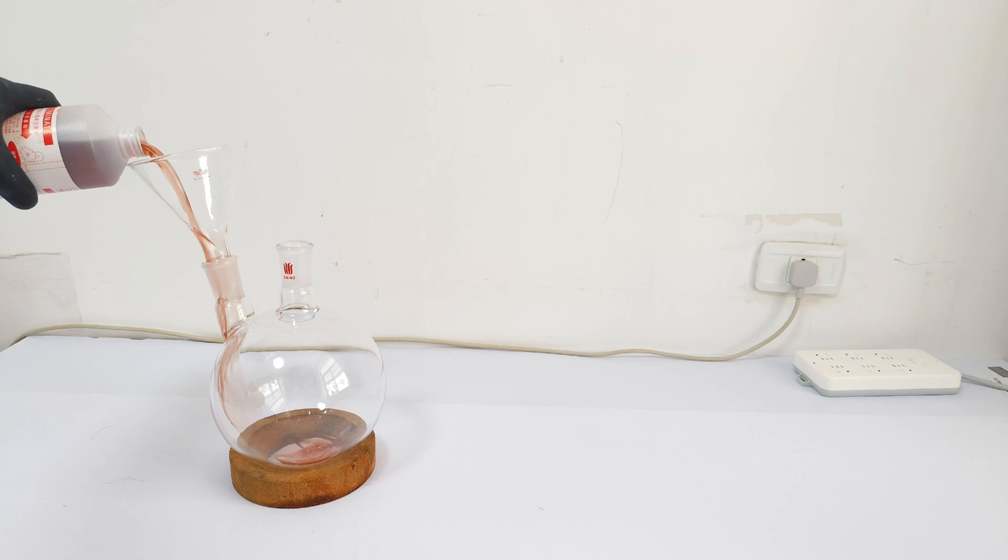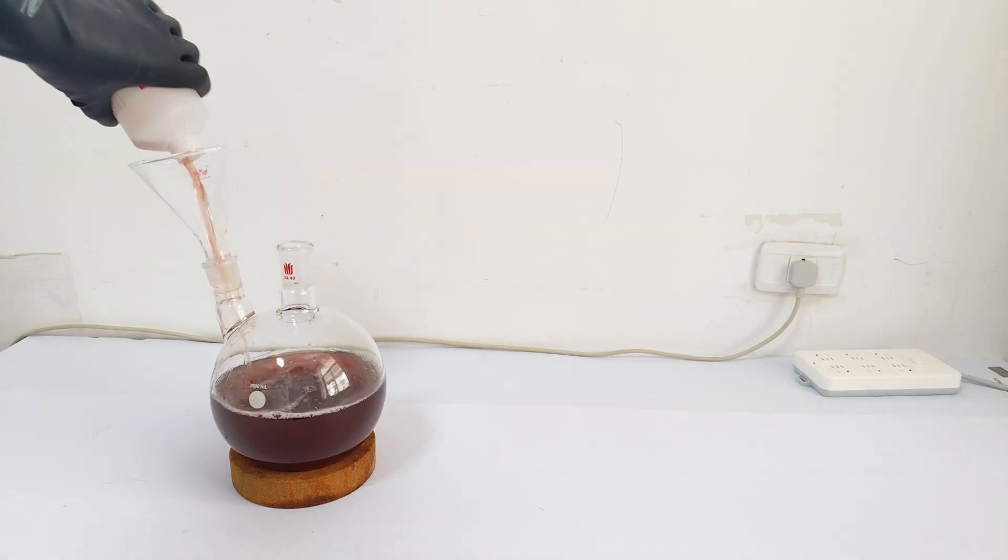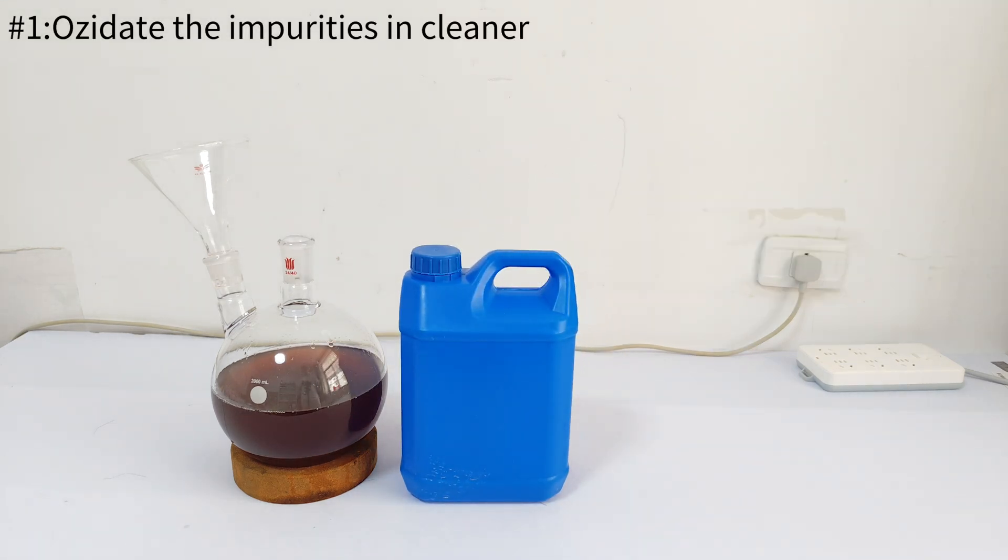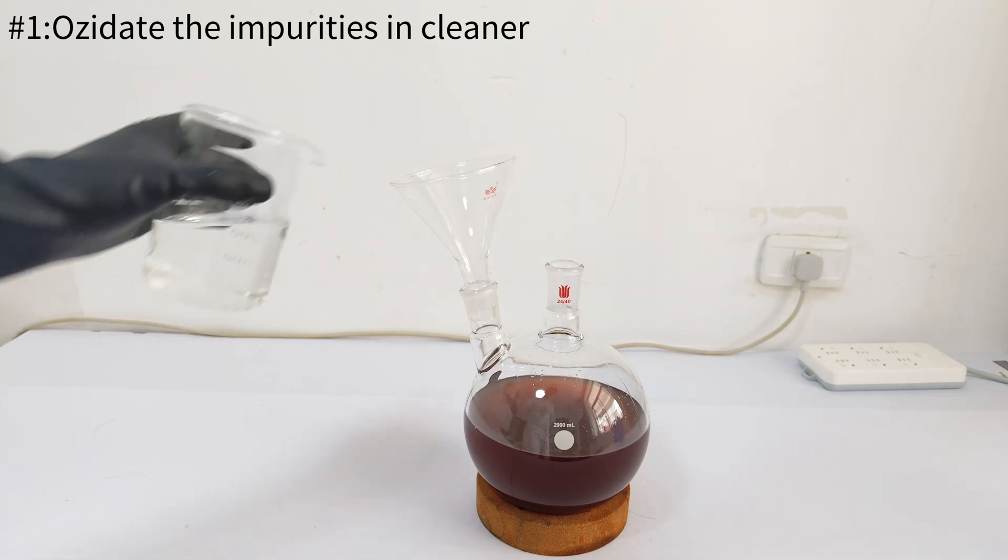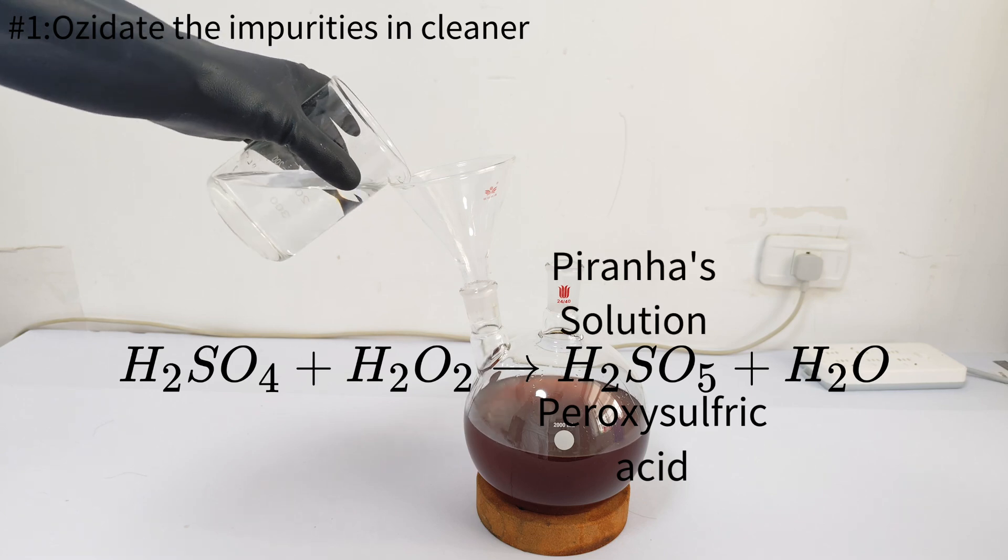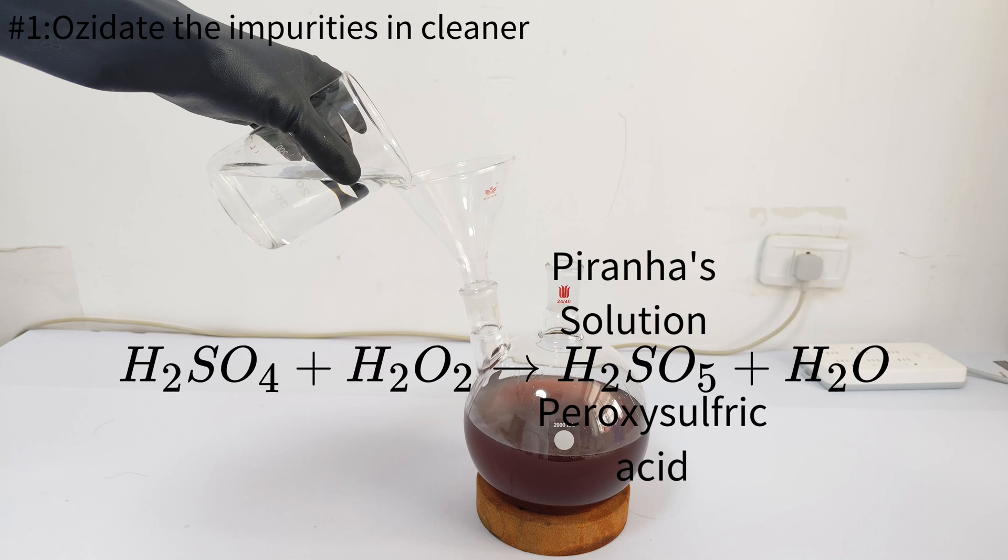So I just poured some drain cleaner into the big flask. The first thing I need to do is oxidize the organic impurities and SO2 in drain cleaner with some hydrogen peroxide, which can react with sulfuric acid and form peroxysulfuric acid solution, which is usually called piranha solution.